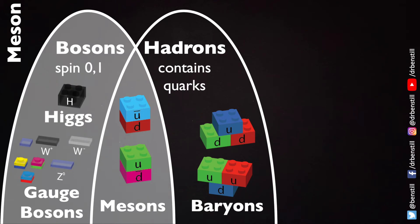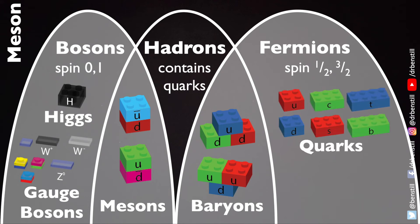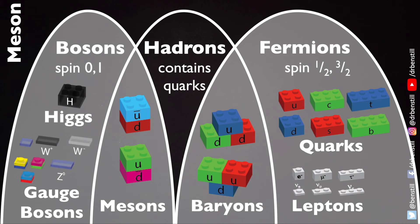The other hadrons — the baryons — take their place as part of another group of particles called fermions, because they have spin of one half, three halves, or half-integer spin. The baryons as composite particles join the fundamental indivisible particles of the quarks and the leptons as part of this group of fermions.